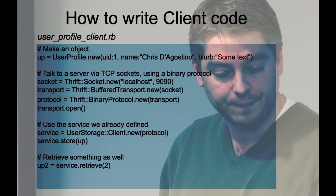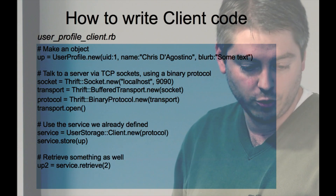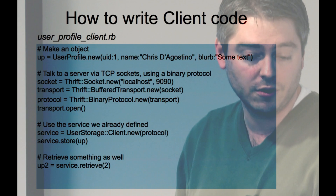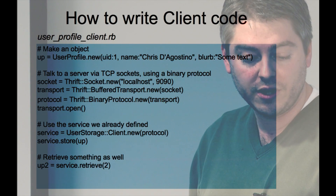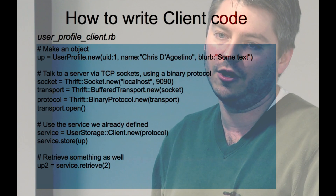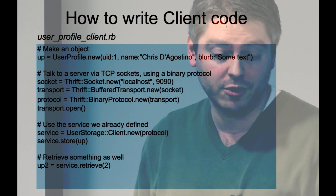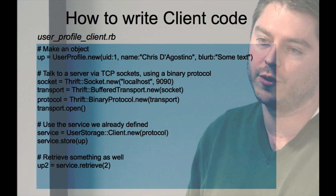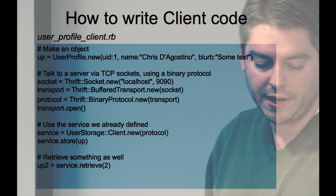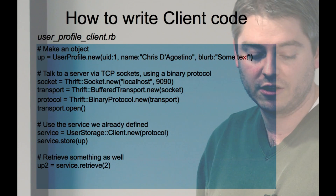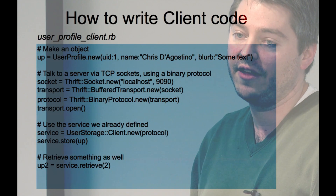It generated these three files. To actually use it — this is Ruby code — the user profile object that I defined as a struct earlier, we just create one. We create a Thrift socket to whatever the server is, then you create a transport and a protocol. Both of those are pluggable. Thrift provides a few different transports and quite a few protocols: JSON protocol, a text protocol for debugging if you want to be able to read it easily, a compressed protocol that compresses the data before sending it. But binary protocol is the most common. You open the transport, create a client, and at that point you just call the functions — store, retrieve, any of the other functions you define just work.